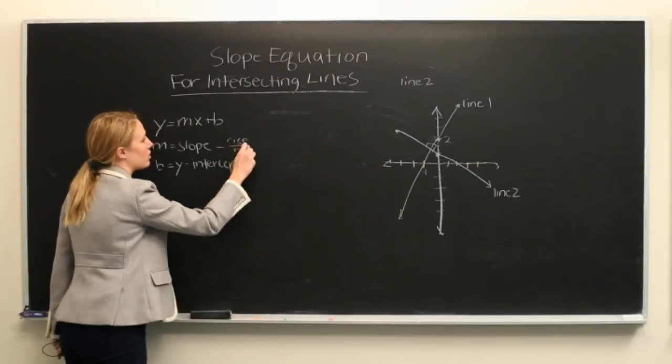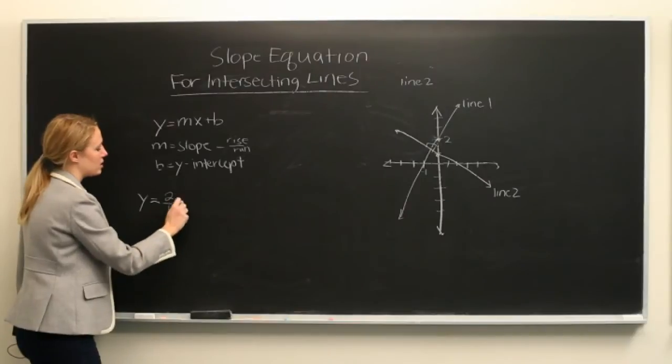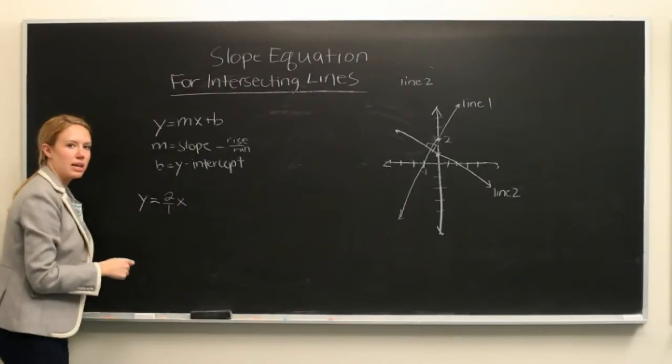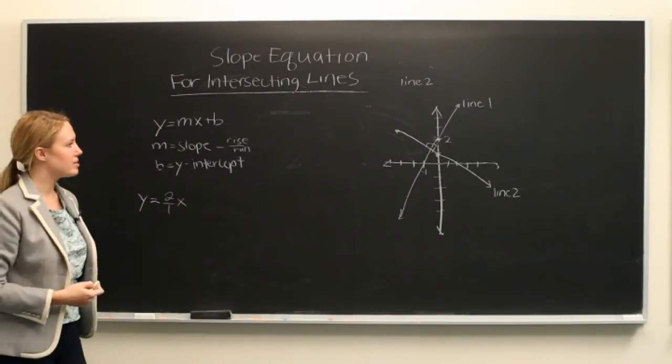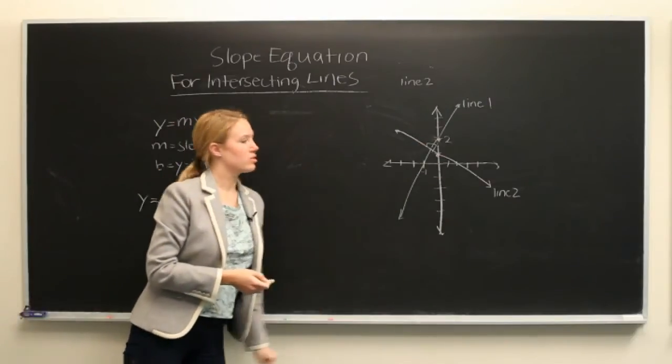which is equal to 2 over 1 times x plus the value where it crosses the y-axis, which is 2. Right there, it's going to cross.